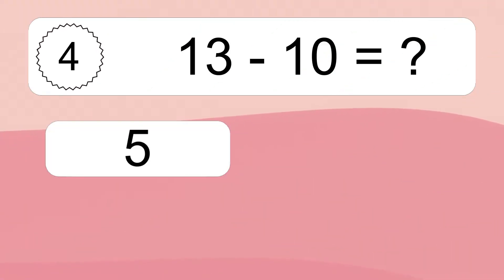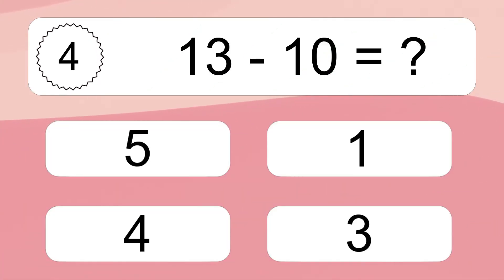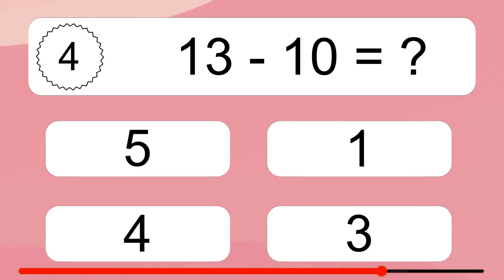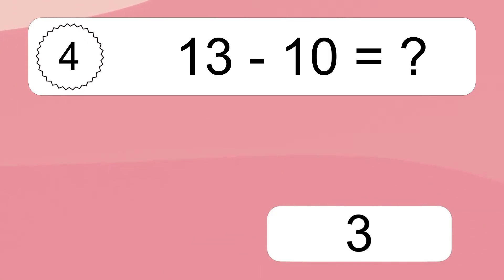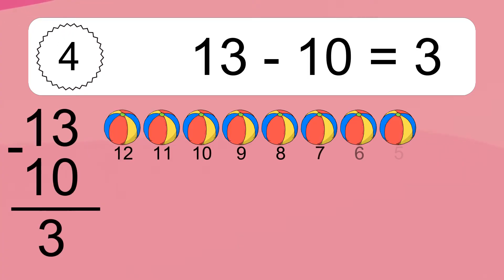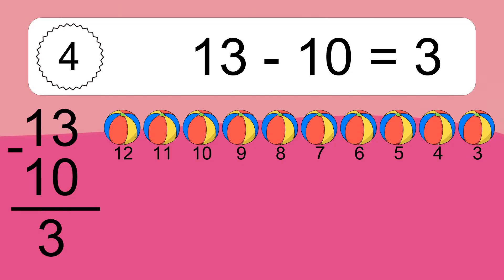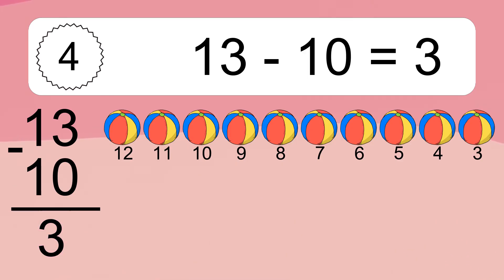13 minus 10 equals what? 13 minus 10 equals 3. Let's count it: 12, 11, 10, 9, 8, 7, 6, 5, 4, 3.